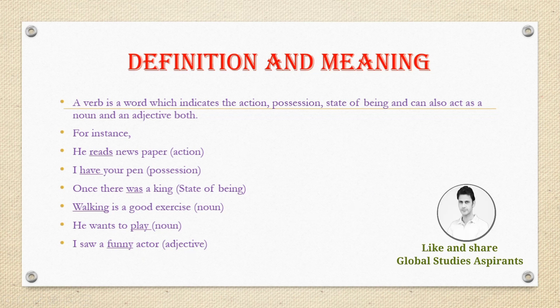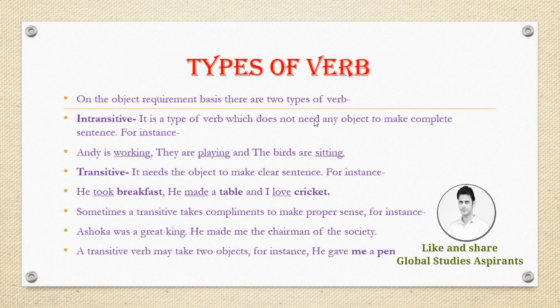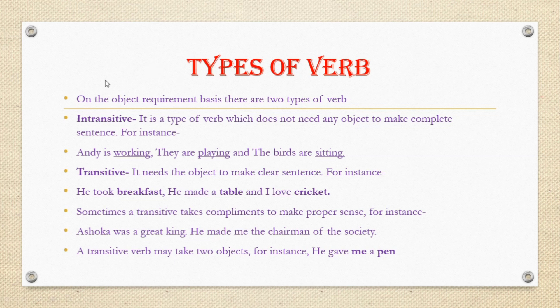Now let's talk about the types of verbs. Based on object requirement, there are two types: intransitive and transitive. An intransitive verb does not need any object to make a complete sentence. For example: 'He is working,' 'They are playing,' and 'The birds are sitting' — none of these sentences have an object.